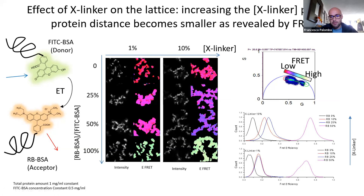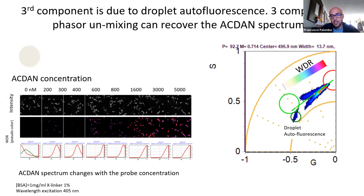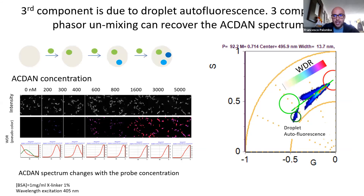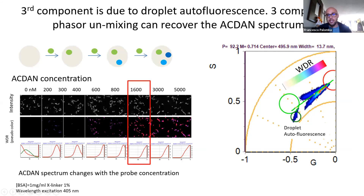We then explored whether the heterogeneous environment inside the phase separation affects the probe's optical response as a function of probe concentration. We identified the best concentration — the one at which the spectrum becomes constant — meaning all available pockets in the protein phase separation are populated. We also found that this phase separation is slightly autofluorescent, so we had to develop a three-component analysis to properly analyze these protein phase separations.